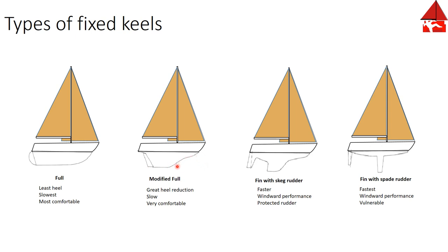The modified full keel still extends most of the length of the boat but has a notch cut out in front. That notch reduces the amount of wetted area, increasing the performance of the boat. This is also a heavy keel so it has a reduced amount of heel, making the boat more comfortable, and because of the size you'll have a low amount of slippage and a very comfortable ride.